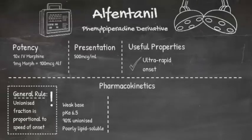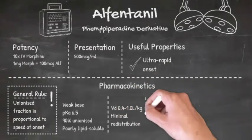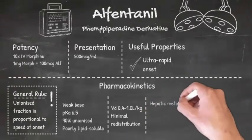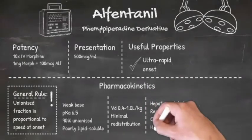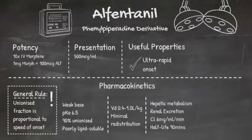Alfentanyl is much less lipid-soluble than fentanyl, and so has a much smaller volume of distribution. Even though the volume of plasma that is cleared of alfentanyl per unit time is less than fentanyl's, alfentanyl is eliminated from the body twice as fast as fentanyl, and so has an even shorter duration of action.